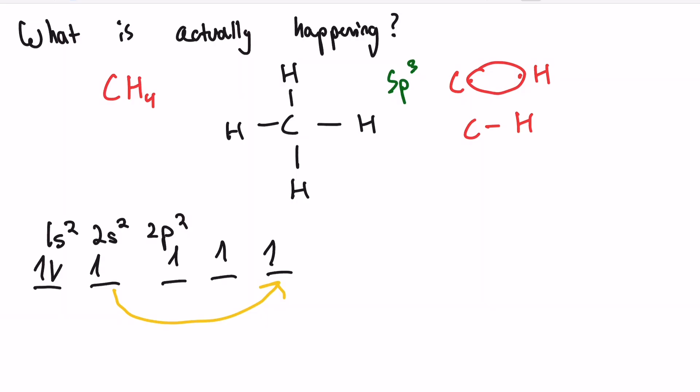What you do need to worry about is our value right here, sp3. What this means is that we have one part s orbital, three parts p orbital. Let's take a look at our s and our p orbitals. As you can see, our p orbitals each have one lone electron. One, two, three. And our s orbital here has one lone electron.